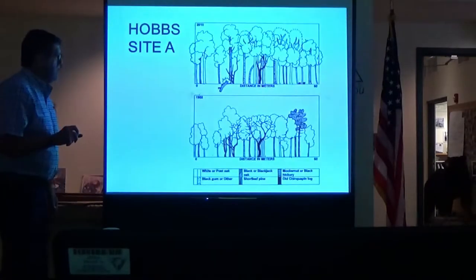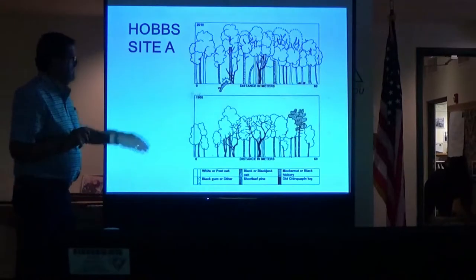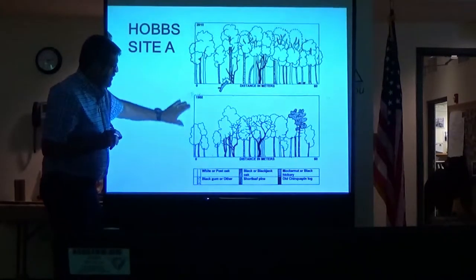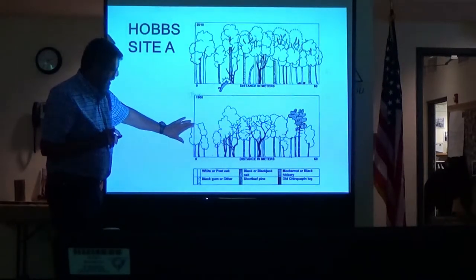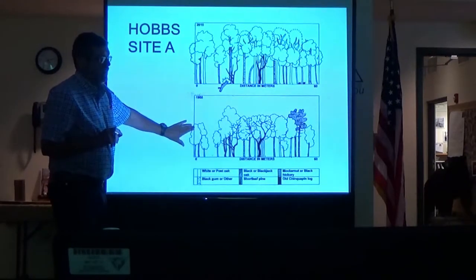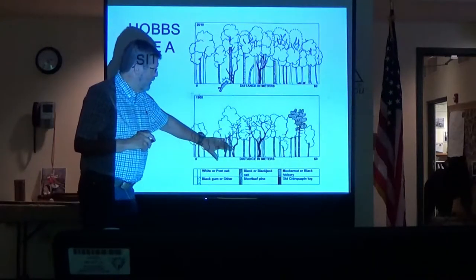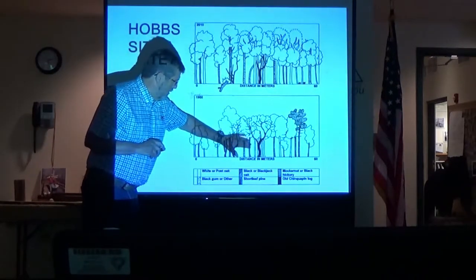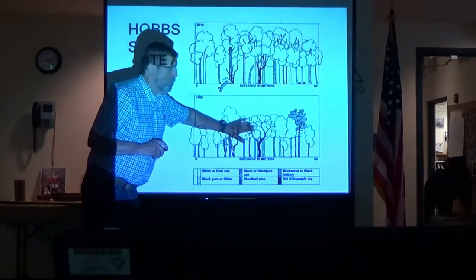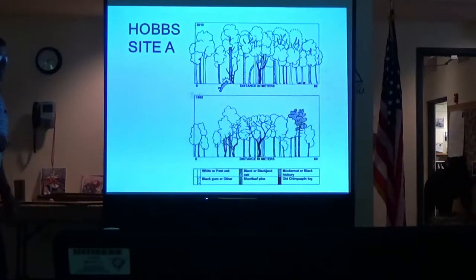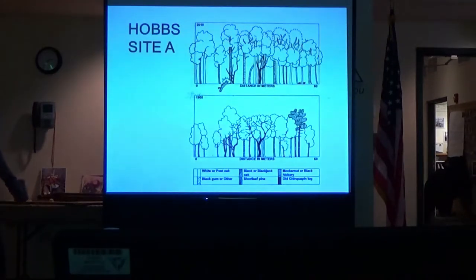When that's done, this is what we see. This is the forest in 2010 and this is what it looked like back in 1955. You can see that back in 1955, the big chinkapins were canopy-dominant trees. If they weren't understory trees, they were canopy-dominant.